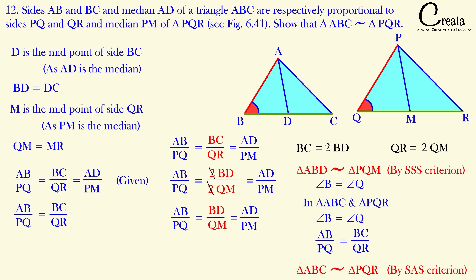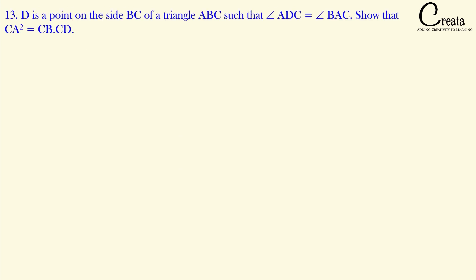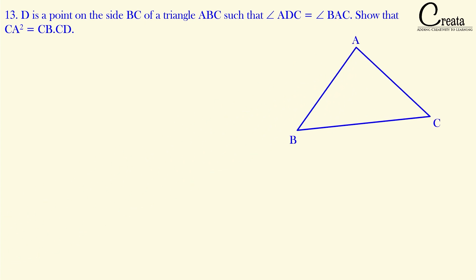Let's move to question number 13 — this question is slightly tricky, so pay full attention. D is a point on side BC of triangle ABC such that angle ADC equals angle BAC. Show that CA squared equals CB into CD. Let's understand: in this question we are given triangle ABC and point D is on side BC.